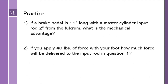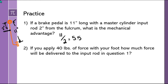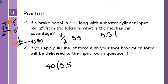Practice on mechanical advantage: situation one has 11 inches from the pivot to the pedal and 2 inches from the pivot to the input rod. Taking the big number divided by the small: 11 divided by 2 equals 5.5 — a 5.5 to 1 mechanical advantage. For question two, if you're applying 40 pounds of force at the pedal with that 5.5 to 1 advantage, then 40 times 5.5 equals 220 pounds of force delivered to that master cylinder.